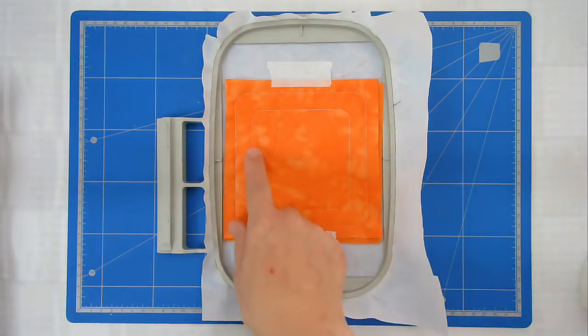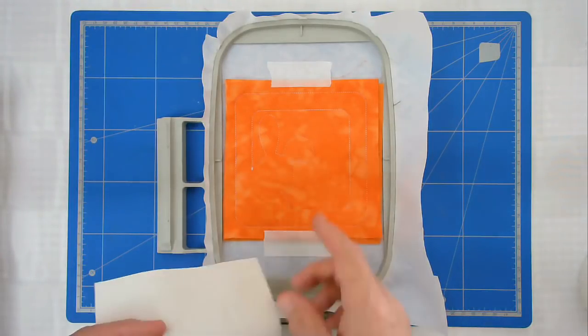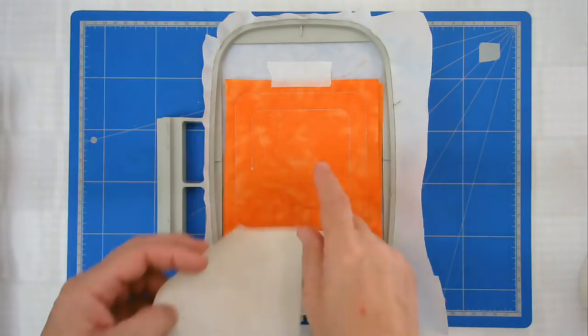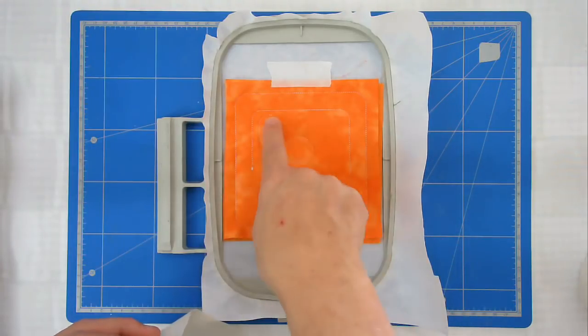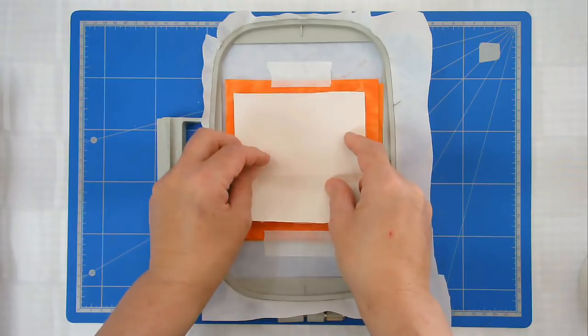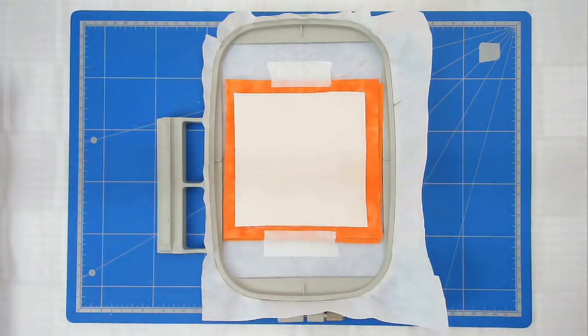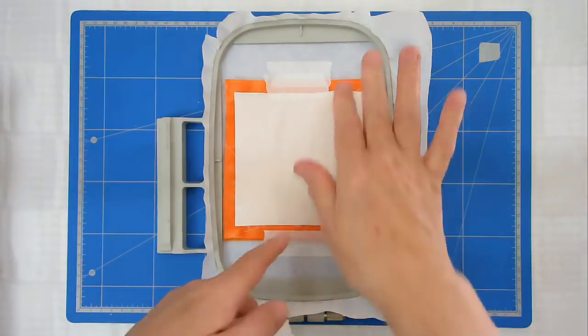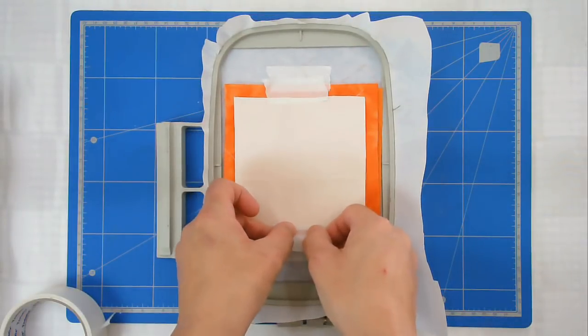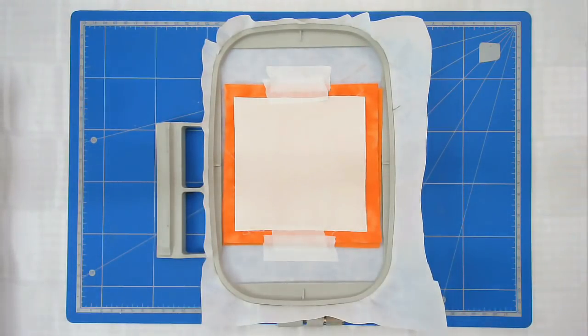Next I'm going to place my background fabric over this outline here, the one that's just been stitched, and once again I'm going to tape it in position so that it doesn't move. I'm now going to pop that back in my machine and stitch round number three which is going to stitch it down.